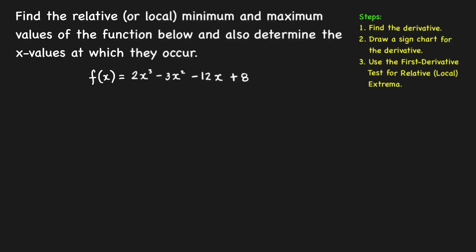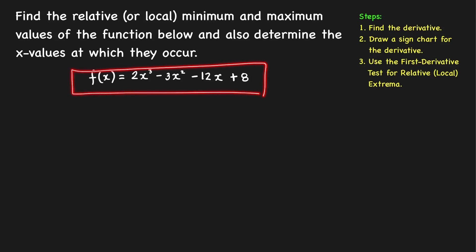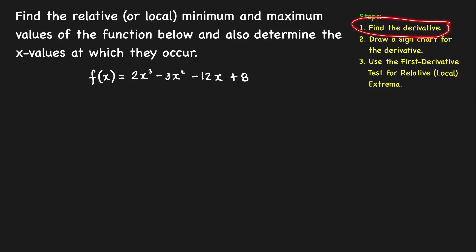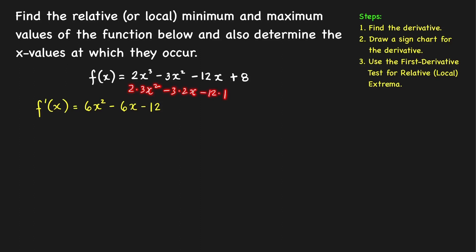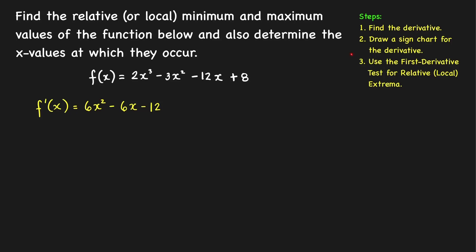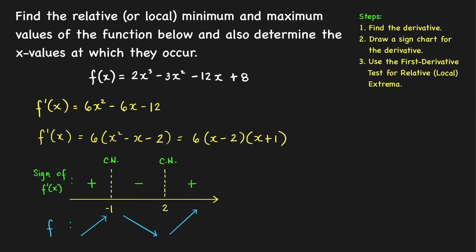Let's have some examples. First problem: let's find the relative minimum and maximum values of this function and determine the x values at which they occur. Following the three steps, first we find the derivative. The derivative is equal to 2 times 3x² minus 3 times 2x minus 12 times 1, which simplifies to 6x² minus 6x minus 12. Next, we draw a sign chart for the derivative.